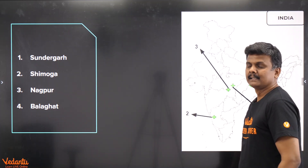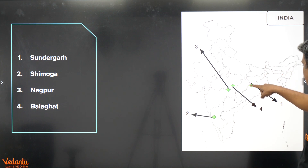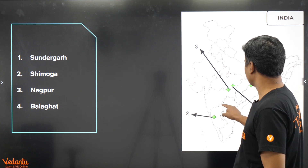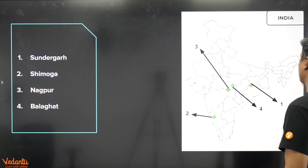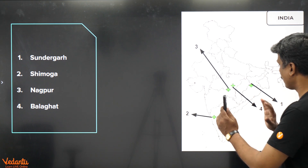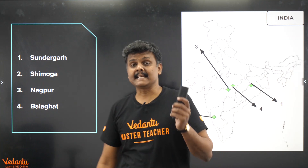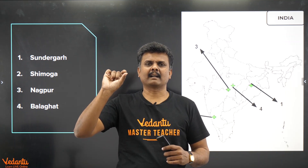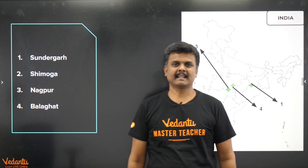Where is manganese found in India? Number one: Sundargarh, in the Jharkhand belt. Number two: Shimoga, in Karnataka. Number three: Nagpur in Maharashtra. Number four: Balaghat in Madhya Pradesh. These are four areas where manganese is found. Create a mnemonic for these four so you can quickly recall them when a map question comes.